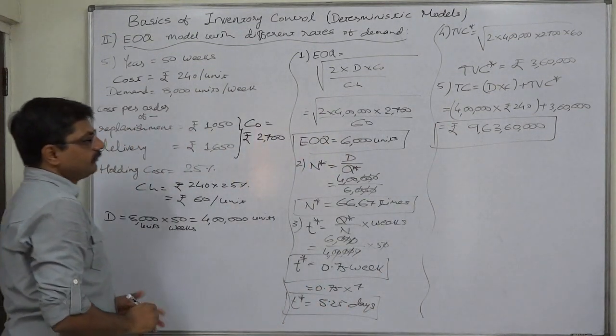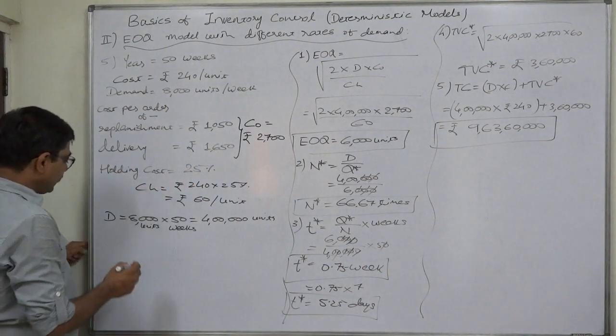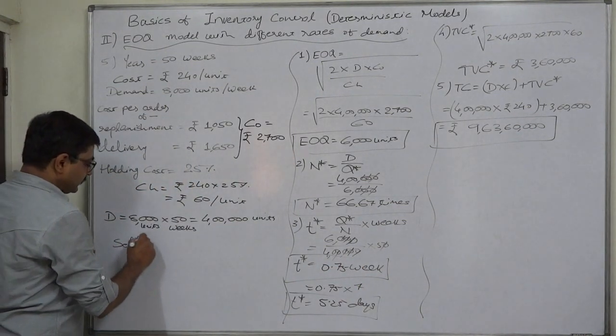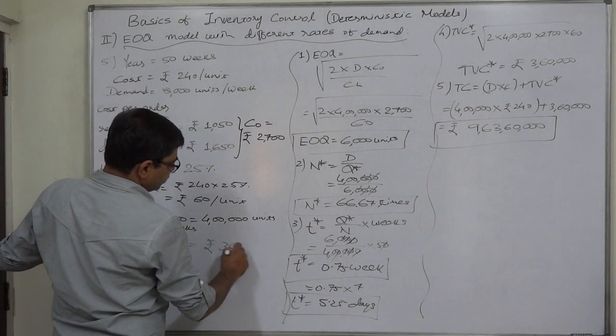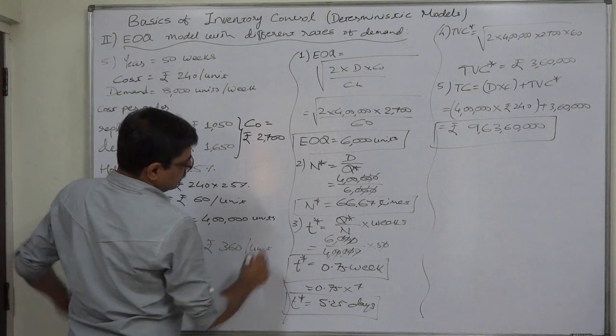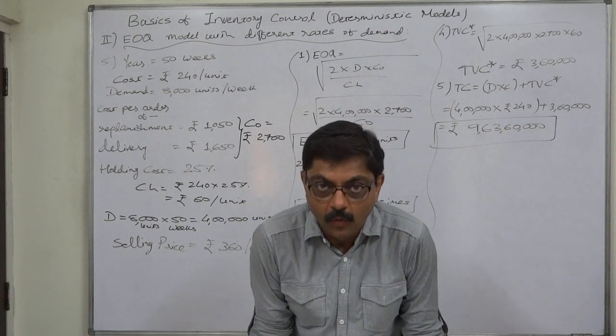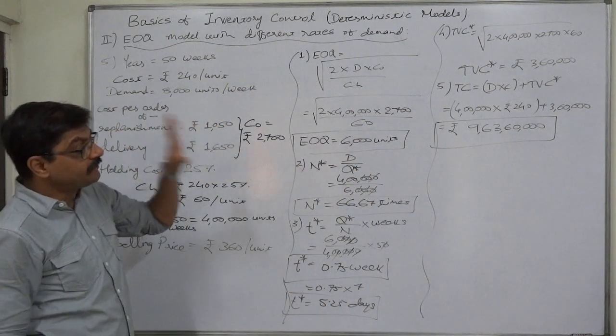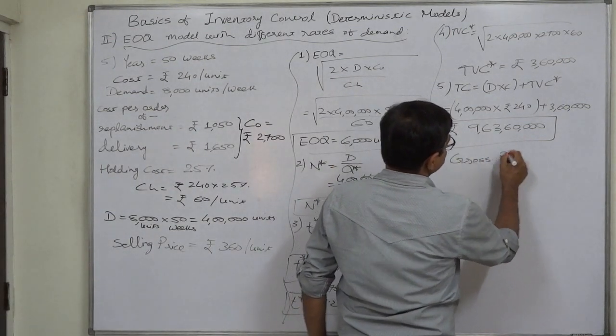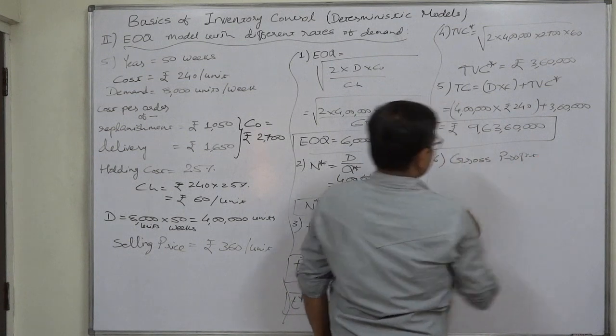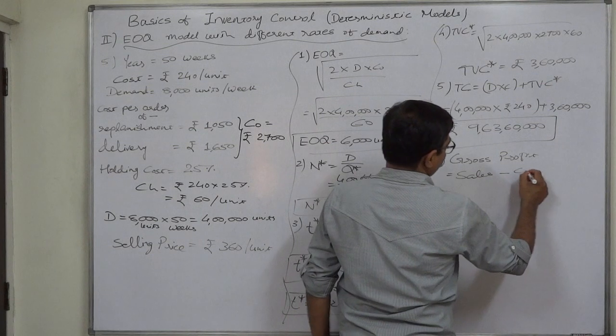Another item we need to calculate in this particular case is if it is given that selling price is rupees 360 per unit. If selling price of rupees 360 per unit is given, what can be the gross profit from sale of this particular item? Now we know that gross profit equals to sales or sales revenue minus cost of sales.